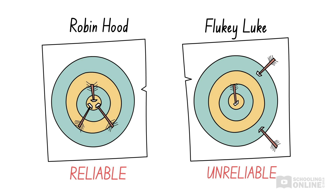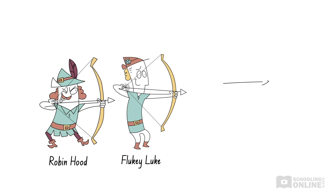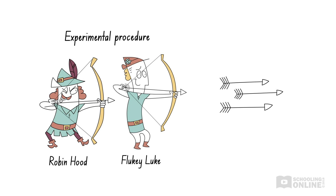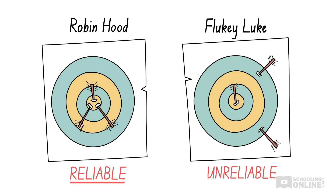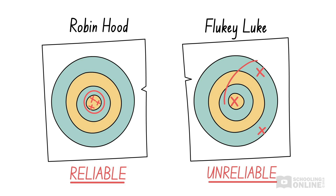This works the same way as reliability in science. The archers represent the experimental procedure that we performed, while the arrows in the target represent the experimental data we obtained. If the experimental procedure is reliable, like Robin Hood, then the results will be close to each other. However, if the experiment is unreliable, like Fluky Luke, then the results will be all over the place.